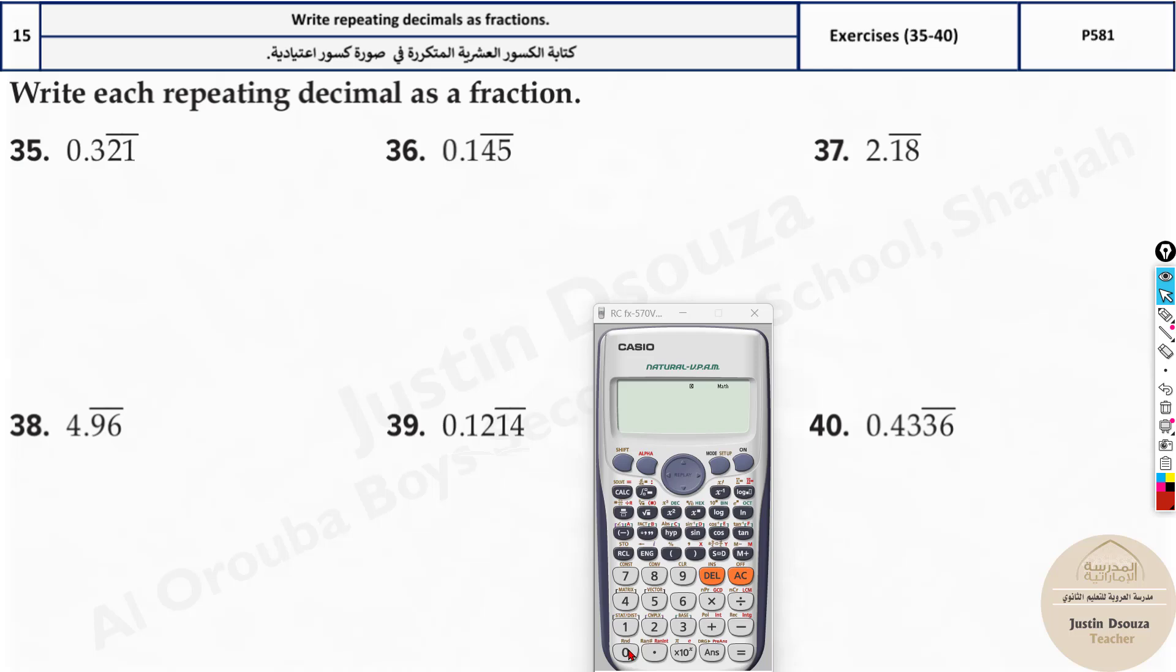There's an easy trick to solve all these problems. For 0.321, write it as is. Now wherever you can see the line, that's the repeating part. That means this number is going to be 212121 and so on. It keeps repeating. If you write a considerable amount of digits, you'll directly get the answer as a fraction. You can see that's the answer.